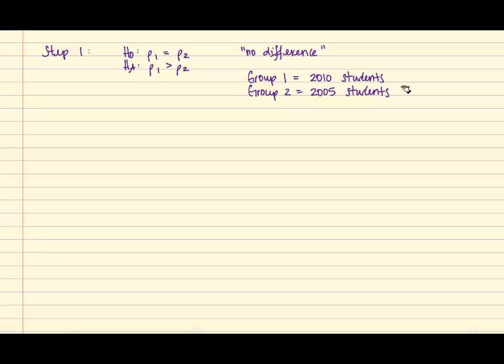For step 2, we're going to state the level of significance. And here, alpha is equal to .10.